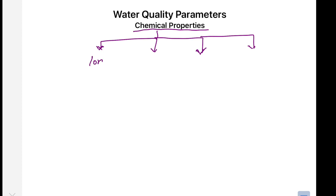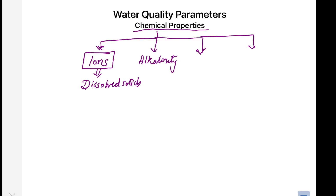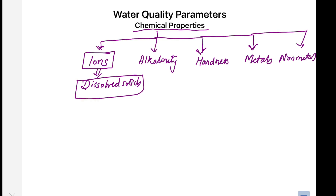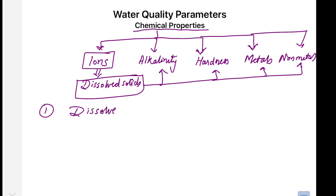The chemical parameters are because of certain chemicals, and such chemicals which are ready to combine are present in the form of ions. These ions are known as dissolved solids present in water. These solids are further classified into different categories according to their effect in water — alkalinity, hardness, different types of metals, and some non-metals. The first chemical parameter we will study is dissolved solids.